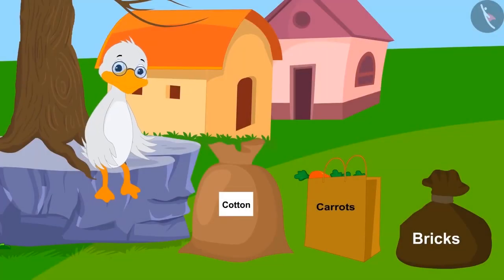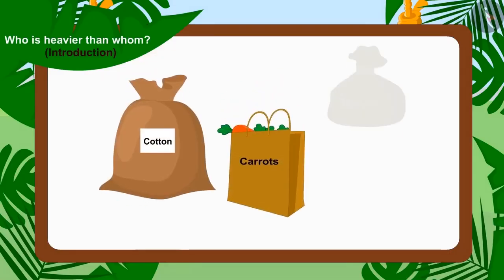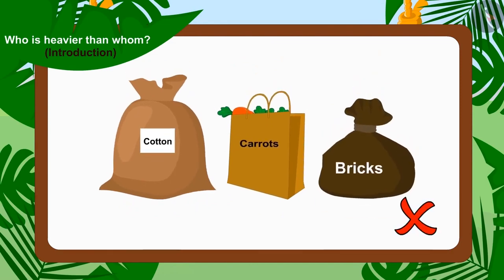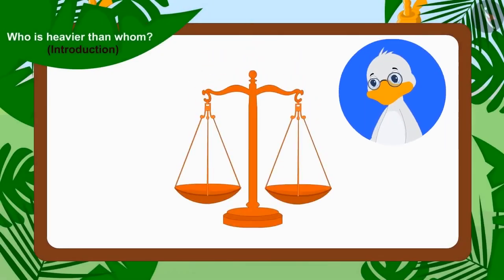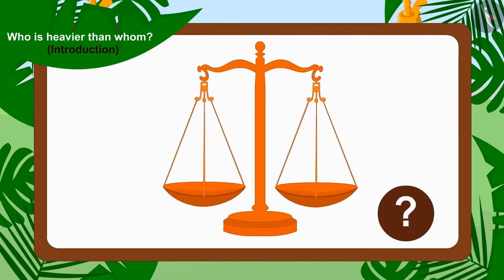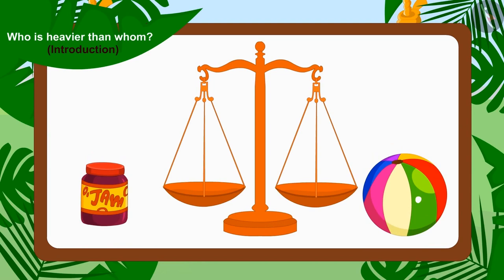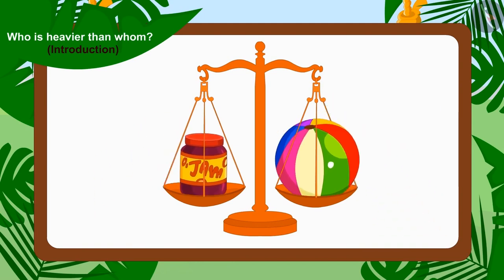Uncle noticed that the three contestants brought different items in different bags and sacks. Therefore, we cannot compare their weight directly. So Uncle brought a weighing scale. A weighing scale is a device for measuring weight and it is made of two plates. We have to put the two things whose weight we want to compare on these plates.